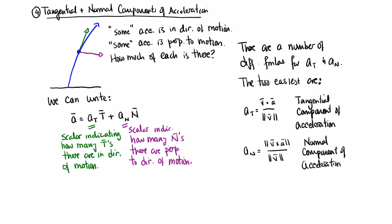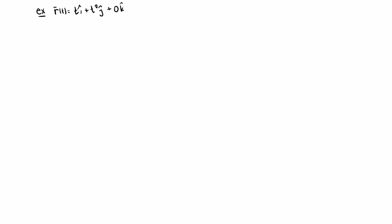Let's go through an example. Let r(t) = ti + t²j + 0k — this is a parabola. The 0k isn't necessary, but it'll be helpful when we do the cross product. We're going to look at a specific point: t = 2. According to the formula, we need v and a.